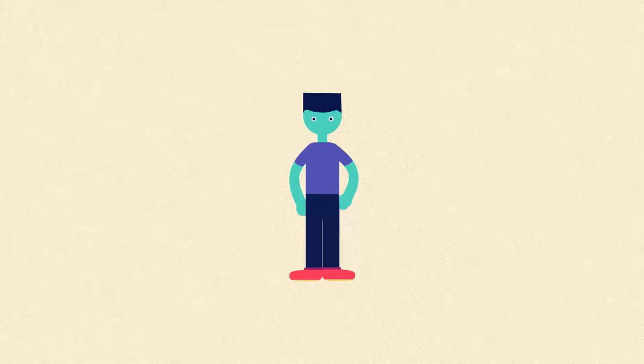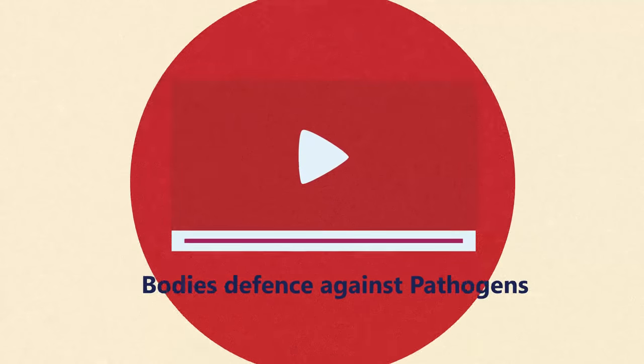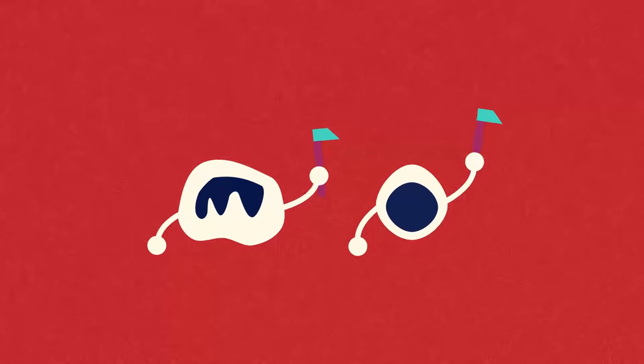Our body has a first line of defense which we saw in the video on body defense against pathogens, but when this fails our white blood cells kick into action.